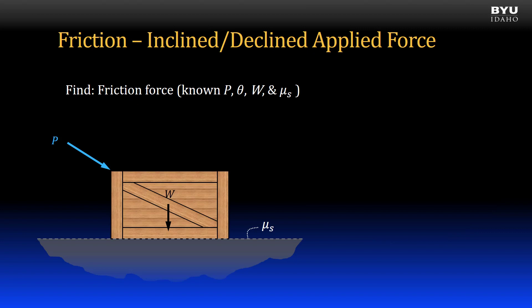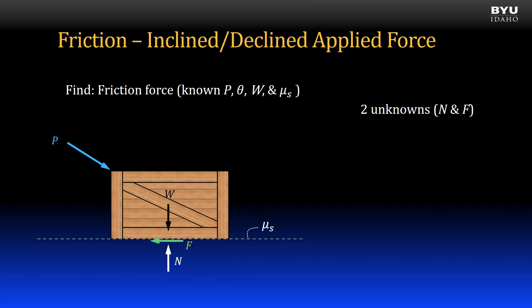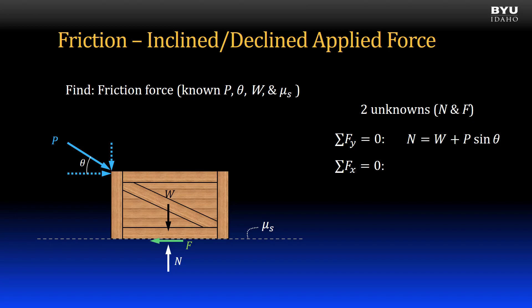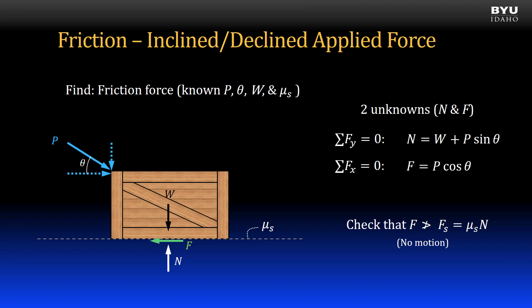In the previous examples, the direction of the applied force on a crate was parallel to the supporting surface. However, the force can be oriented in any direction. Suppose we want to find the friction force when a known force is applied oriented as shown. In this problem there are two unknowns: the normal force N and the friction force. We treat this as a particle equilibrium analysis, so we have two equations — sum of forces in x and sum of forces in y — to solve for our two unknowns. By summing forces to zero in the y direction, the vertical component of the applied force combines with the weight to increase the normal force. Summing forces to zero in the x direction, we find that the friction force is equal to the horizontal component of the applied force. An important check is to determine that the friction force is not greater than the maximum or static friction force, mu sub s times N.